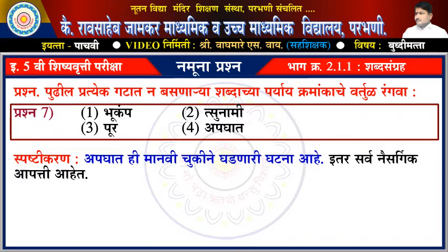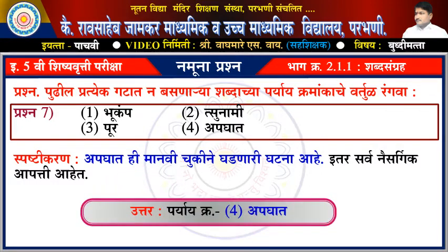સ્પષ્ટિકરણ: અपघात - ભगाथी માણવી ચૂકીને ઘडणारी ઘटना આહે. ઇতર સર્વ નઈસર્ગીક આपत્તી આहেत. ઉત્તર: પર્યાય ક્રમાંક ચાર - અpઘAT.